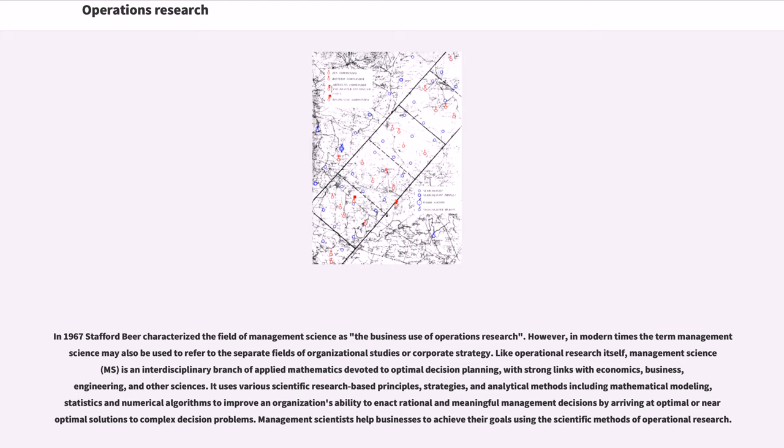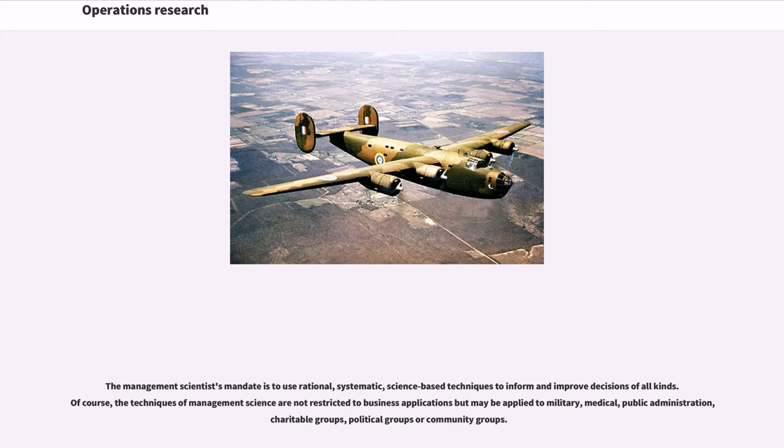It uses various scientific research-based principles, strategies, and analytical methods including mathematical modeling, statistics and numerical algorithms to improve an organization's ability to enact rational and meaningful management decisions by arriving at optimal or near-optimal solutions to complex decision problems. Management scientists help businesses to achieve their goals using the scientific methods of operational research. The management scientist's mandate is to use rational, systematic, science-based techniques to inform and improve decisions of all kinds.